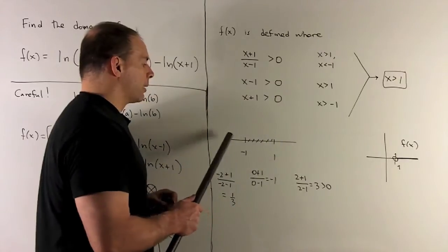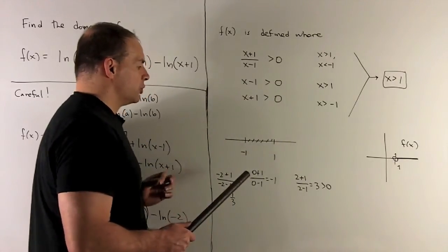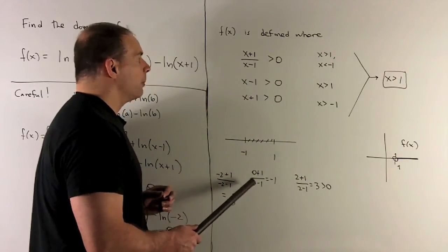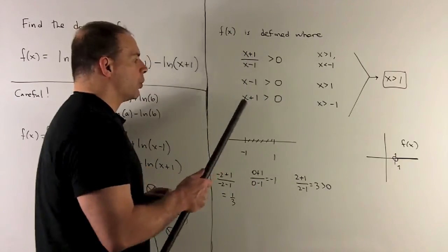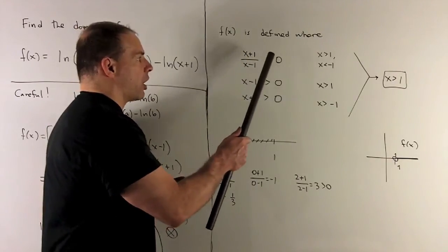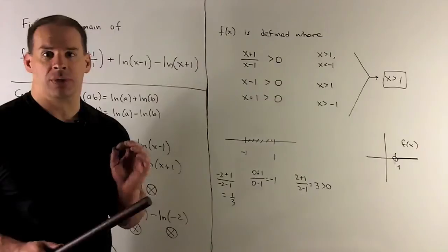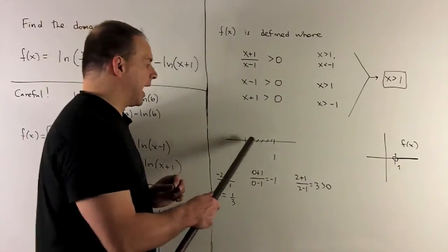So we have three regions and check a point in each region. We try the middle region, put in zero. We're going to get 1 over minus 1. That's not going to make our inequality hold. So we throw that region away. That's where it'll be negative.